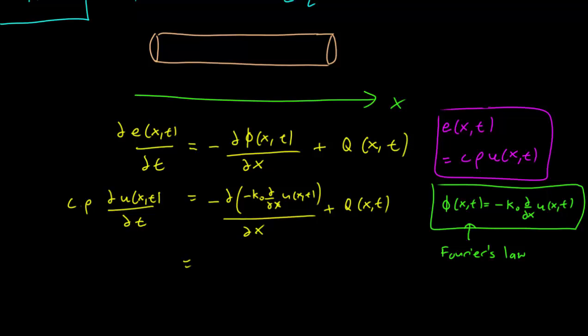So what happens is that we can pull out the constant k_0, the thermal conductivity constant. And we are simply taking the partial derivative of the partial derivative of u. So this is of course just equal to the second partial of u(x,t) plus Q(x,t) as usual.